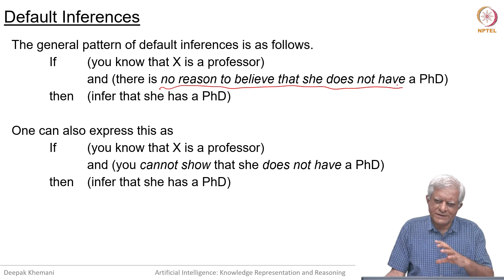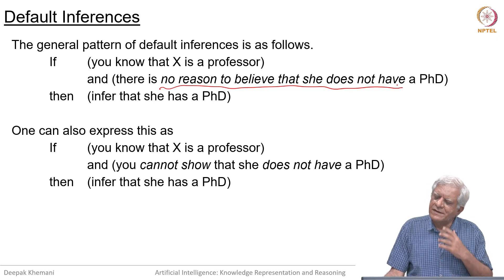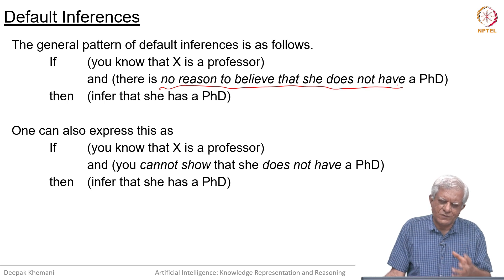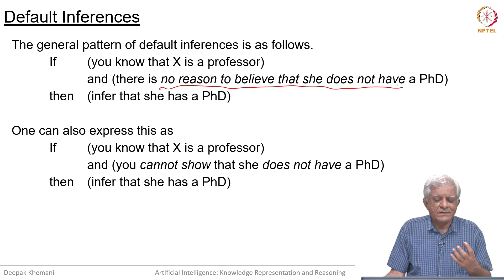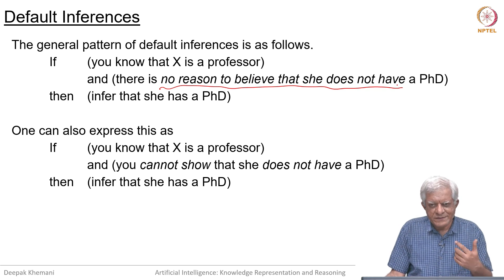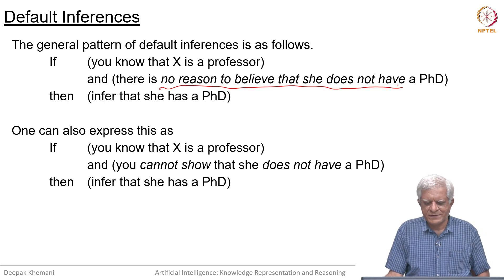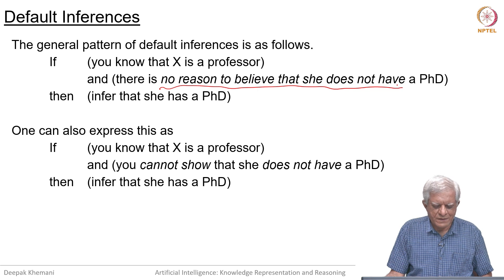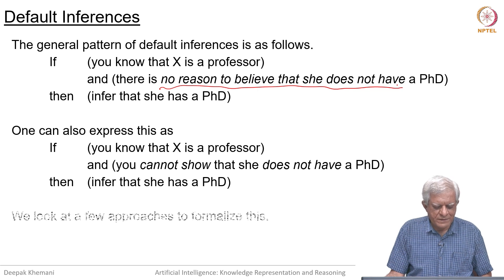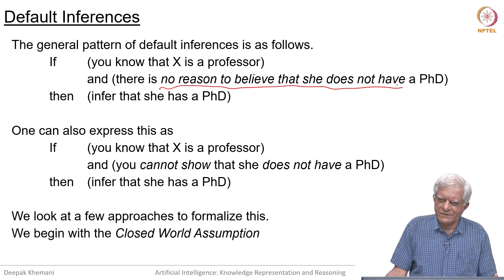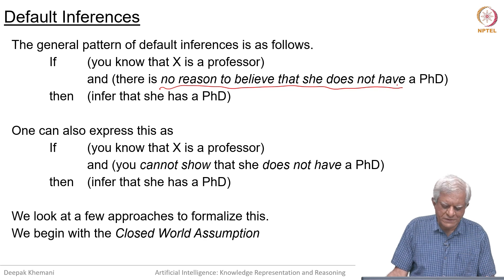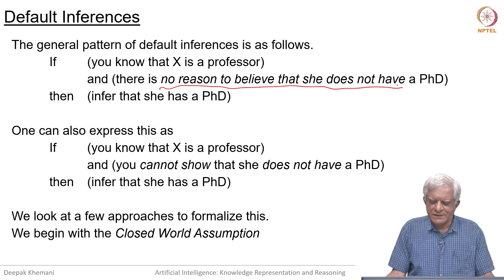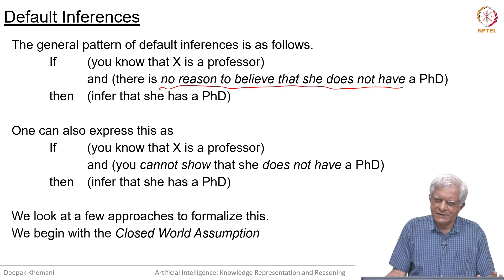This is going to be the general pattern, that we would like to express knowledge in the form of rules which allow you to make inferences, but also put in a condition that unless this condition holds essentially. We will look at some approaches to formalize this and we will begin with simplest of all such formalism, which is closed world assumption. We will do that in the next session.